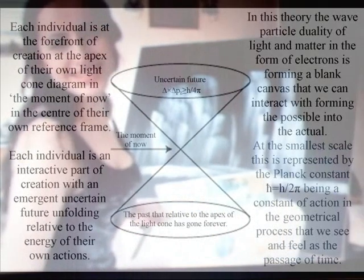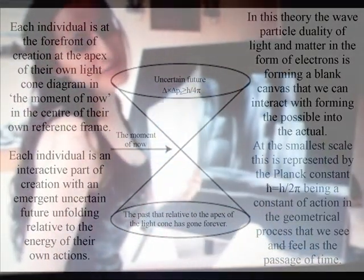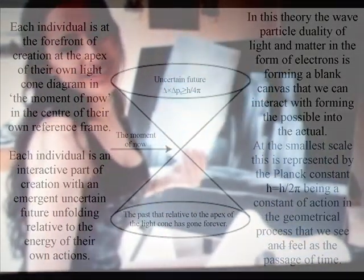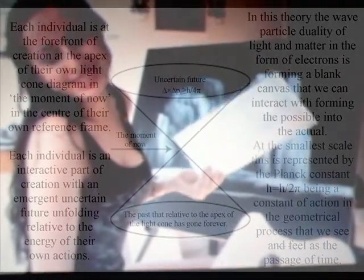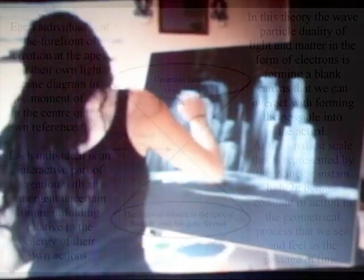With an emergent uncertain future unfolding relative to the energy of their own actions, in this theory the wave-particle duality of light and matter in the form of electrons is forming a blank canvas that we can interact with, forming the possible into the actual.